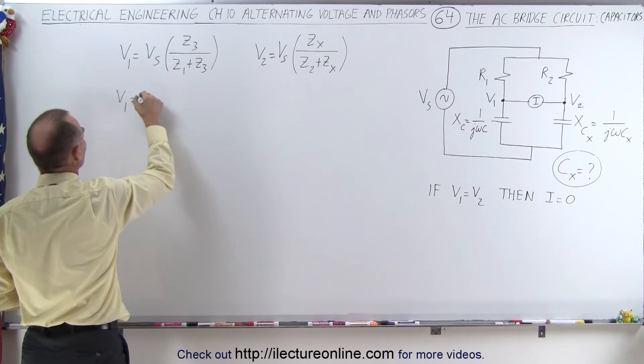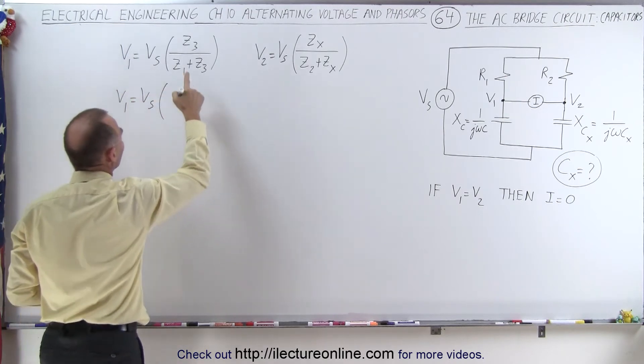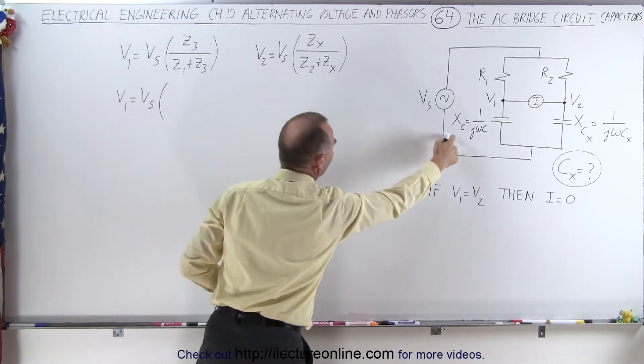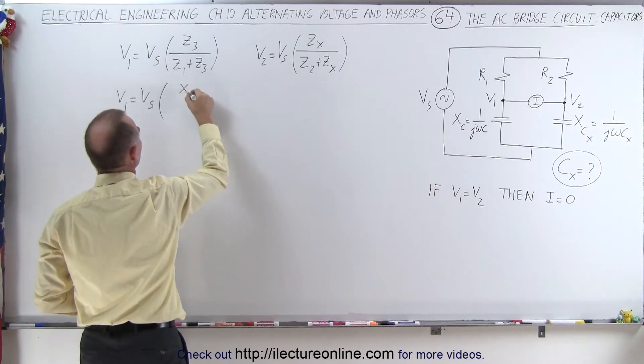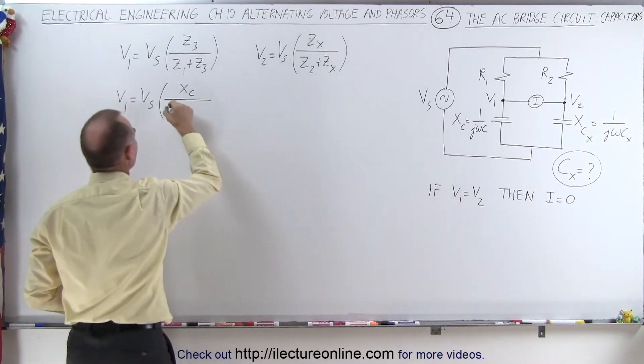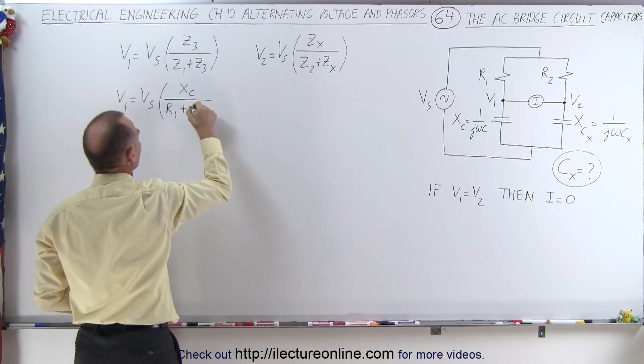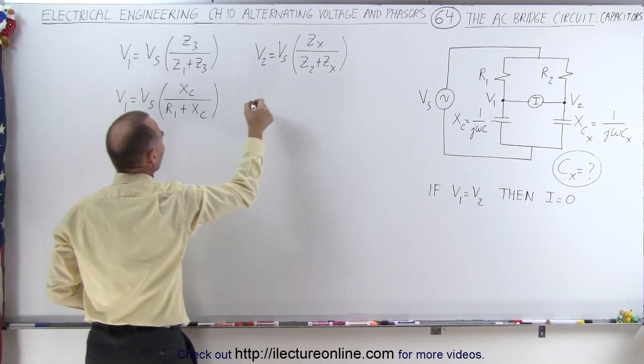So V1 is going to be equal to the source voltage times Z3 is going to be X sub c divided by Z1, which is now R1, and Z3 is X sub c.